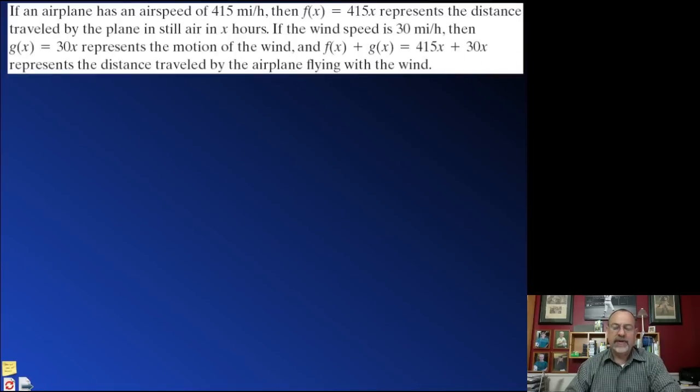In a case where we might want to add functions together would be if we wanted to determine the distance that an airplane traveled when it had a tailwind, a wind pushing it along. You could figure out the airplane distance by multiplying its rate times time, and then you add to that the wind's rate times the same amount of time.